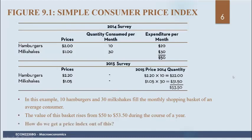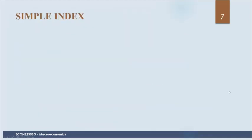Let's first look at a simple index — not even a price index, but a simple index — and then we can use this idea to see how we calculate the consumer price index and see what the differences are. Suppose we have some annual sales figures, and there's a new CEO that started in 2019. We have three years of data — these are sales figures, possibly in the millions.